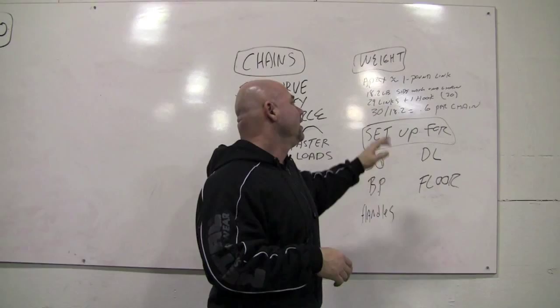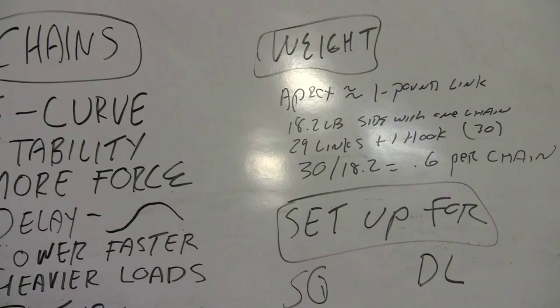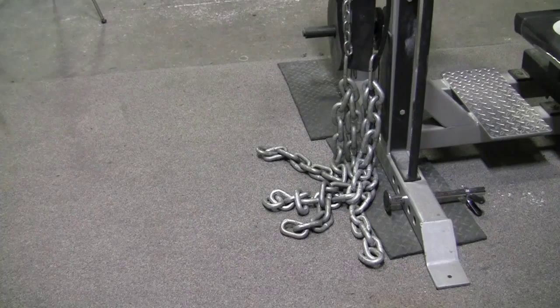divided by 18.2, we're dealing about 0.6 pounds per chain. This will make more sense when I start showing how to hook the chains up and what the actual deloading is. So for ease of mathematics, we're just going to say that each link weighs one pound.